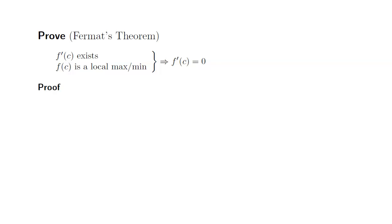Let's try to prove Fermat's Theorem. Here's the statement: If f'(c) exists and f(c) is a local maximum or local minimum, then f'(c) must be equal to zero. So let's prove this.